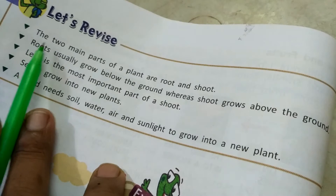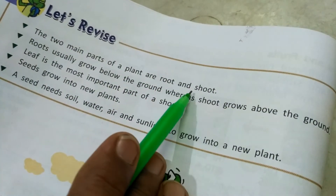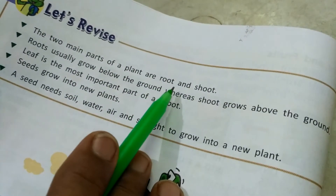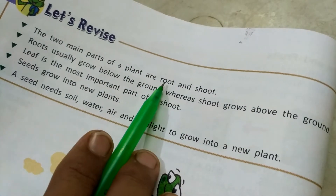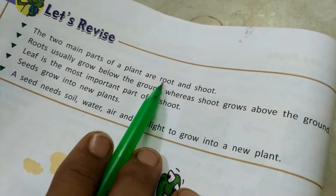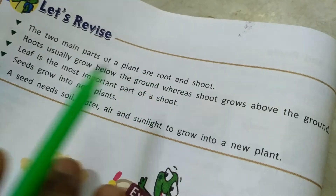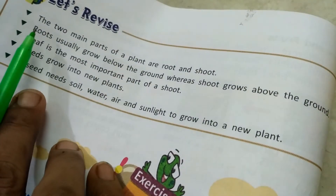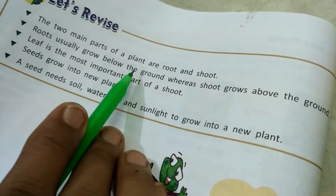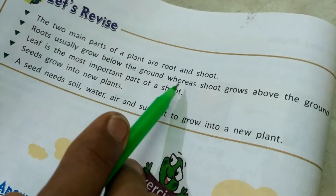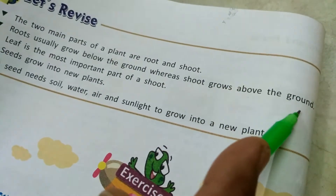The first main point: the two main parts of a plant are root and shoot. The roots usually grow below the ground, whereas the shoot grows above the ground. Shoot means its stem.